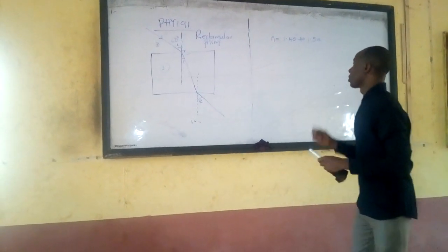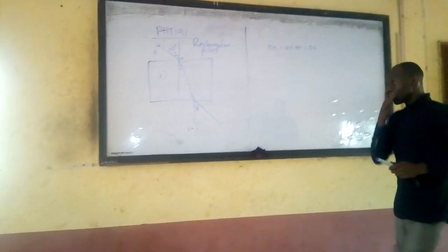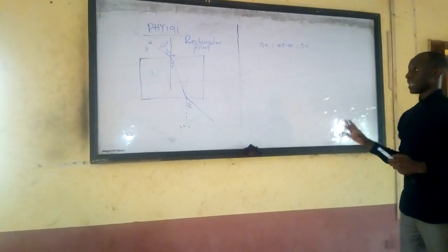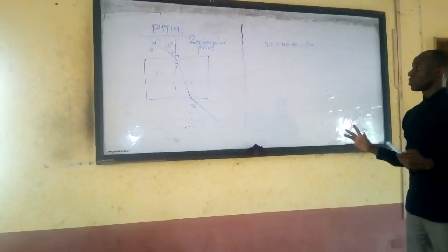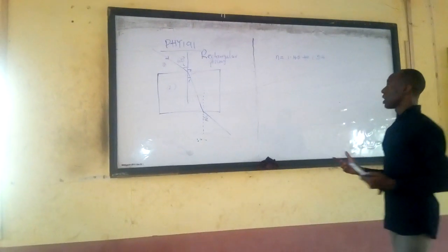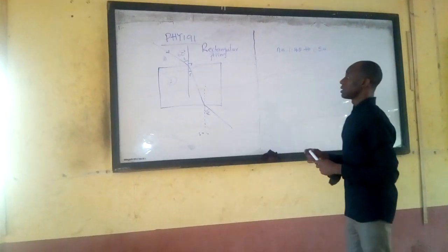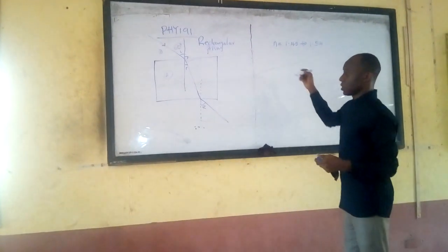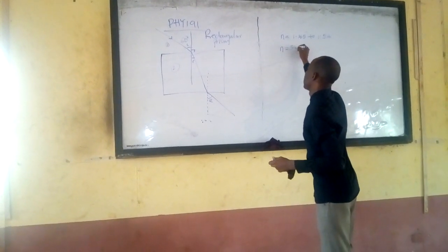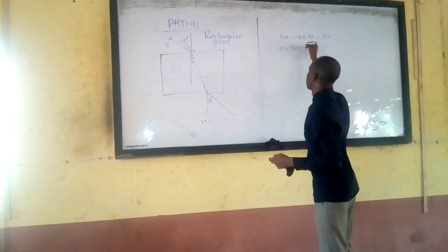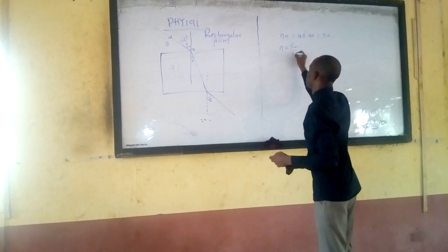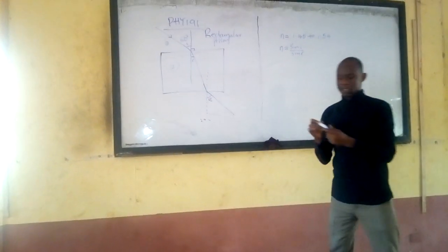There are formulas — like I told you, Snell's law is the formula that guides the experiment. The formula we need is simply: n equals sine(i) over sine(r). That is the formula we need.